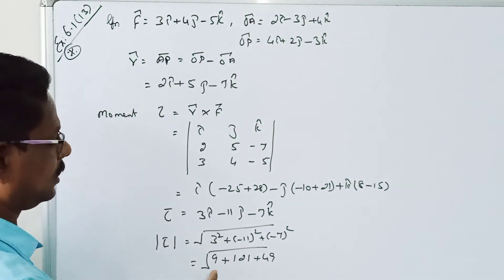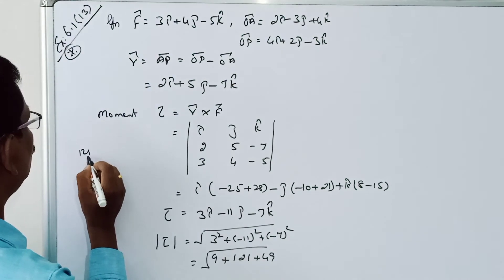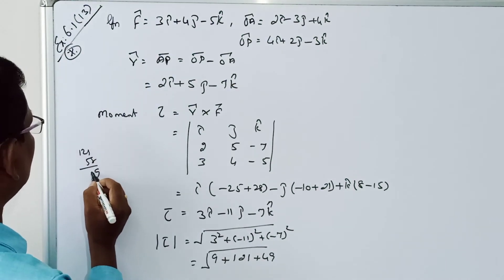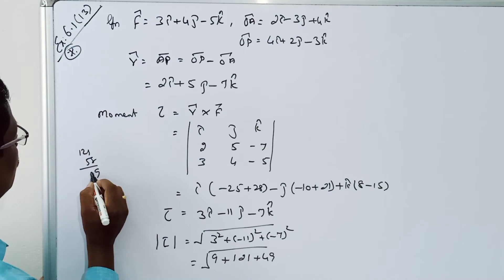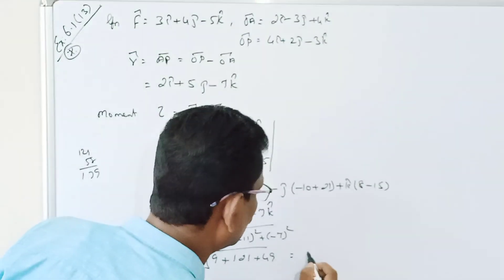So 9 plus 121 plus 49 equals 179. Square root of 179.